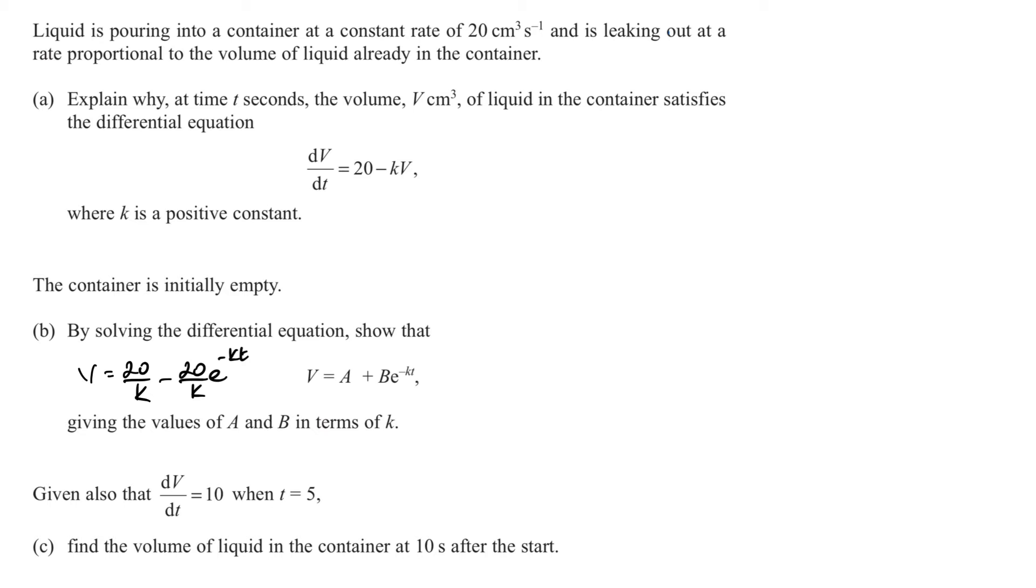Part c tells us that dV/dt equals 10 when t equals 5. So, let's go from here. We've got 10 equals 20 minus kV. We don't have anything in terms of t here, but we have a V equals down here. Let's rearrange first. kV will equal 10. So, k times 20 over k minus 20 over k e to the negative kt is going to be equal to 10. The k's are going to cancel. We get 20 minus 20e to the negative kt equals 10.